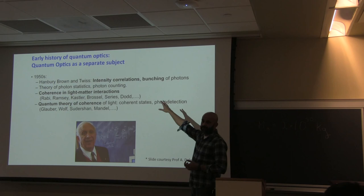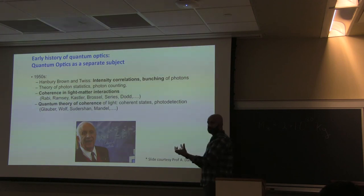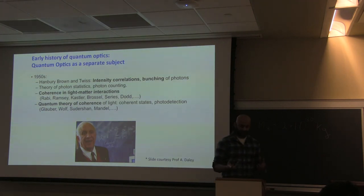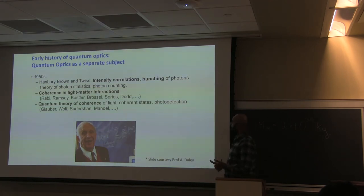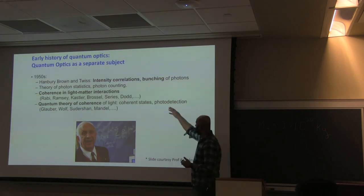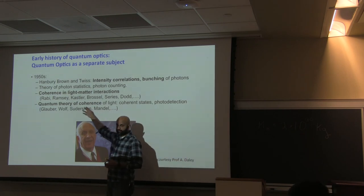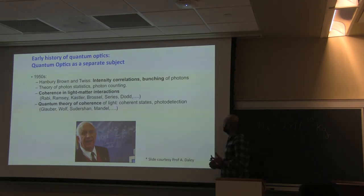The Hanbury-Brown-Twiss experiment is one of the most famous experiments, which we'll cover later in the class. They looked at correlations between two detectors measuring light intensity, and found correlations that could not be easily understood — things like bunching of photons. Eventually, people also saw anti-bunching. All of these statistical correlations had to be understood, and they were not until we had a fully quantum theory of coherence of light, pioneered by Glauber, Sudarshan, Wolf, and Mandel. Glauber won the Nobel Prize for that work.